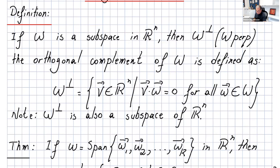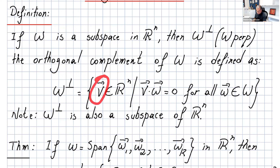If w is a subspace in Rⁿ, then w-perp — the symbol for perpendicular — is defined as: the orthogonal complement of w is the set of vectors v in Rⁿ such that v dot w equals zero. We know that two vectors are perpendicular or orthogonal when their dot product equals zero, and that holds for all w in W.